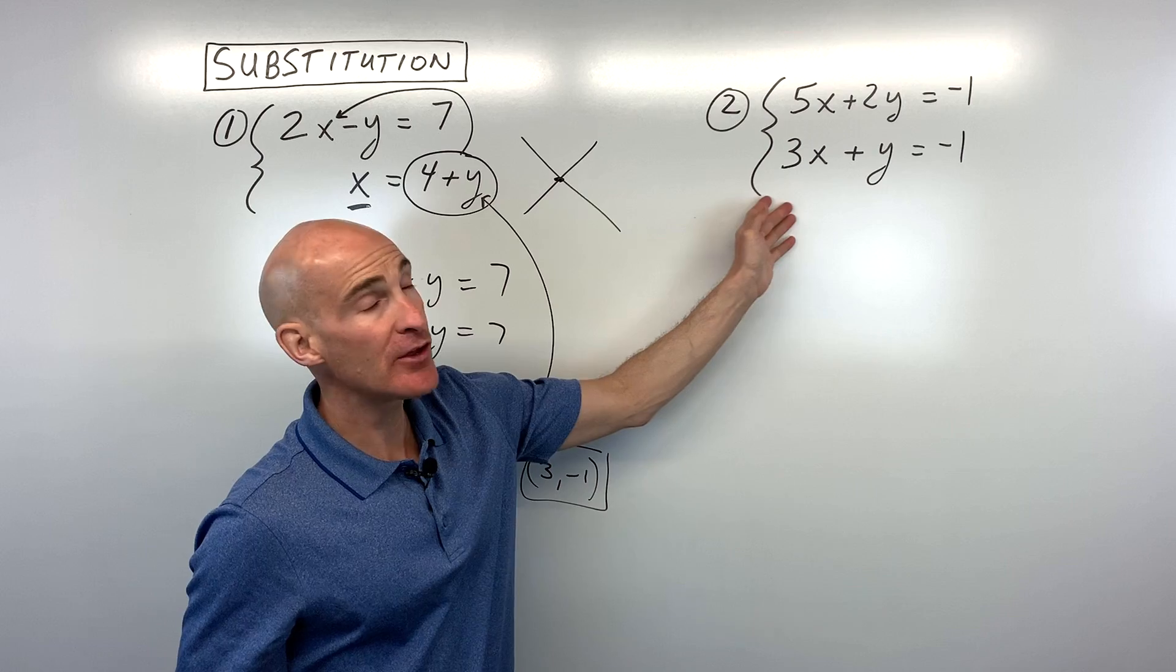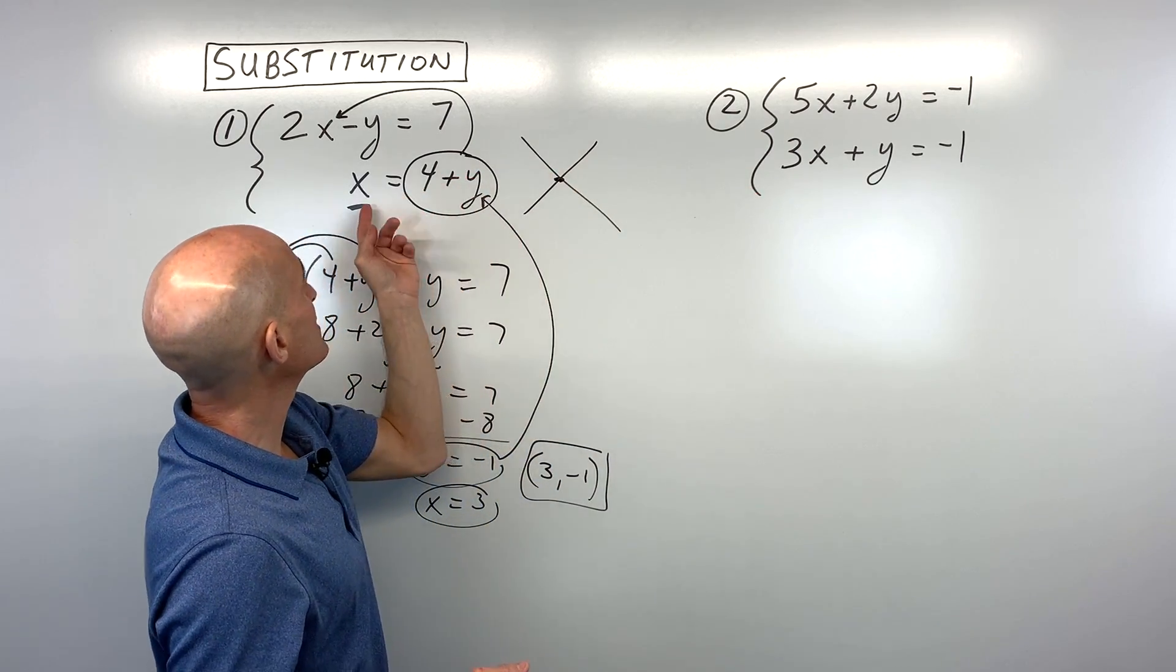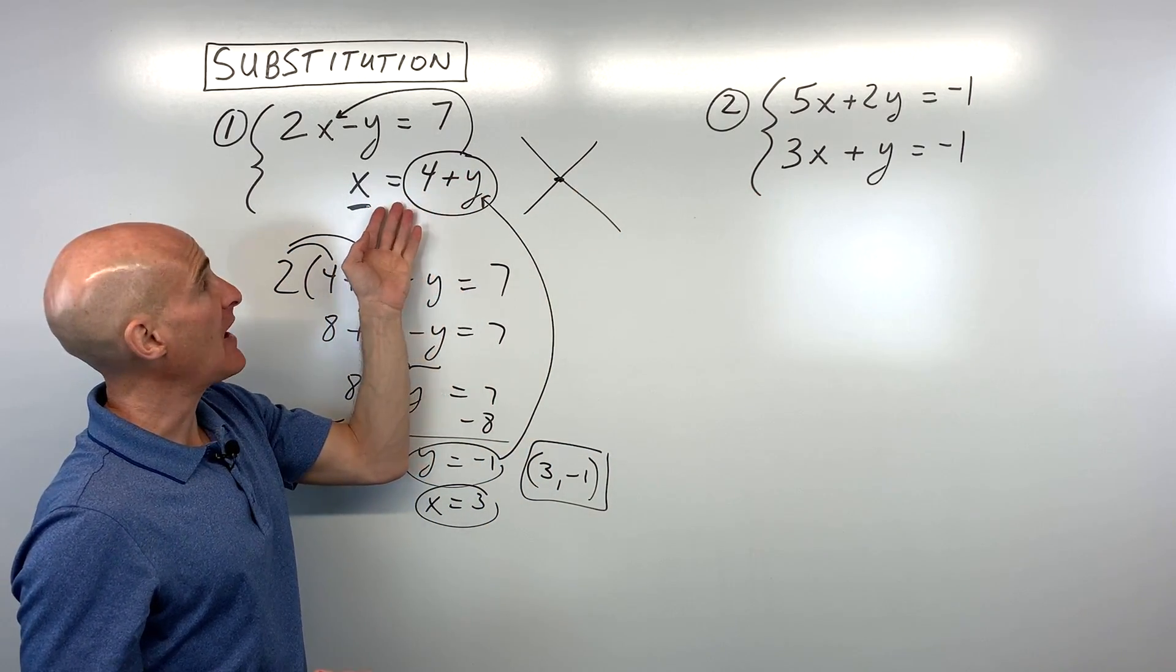Example number two is more challenging because we don't already know what one of the variables equals.